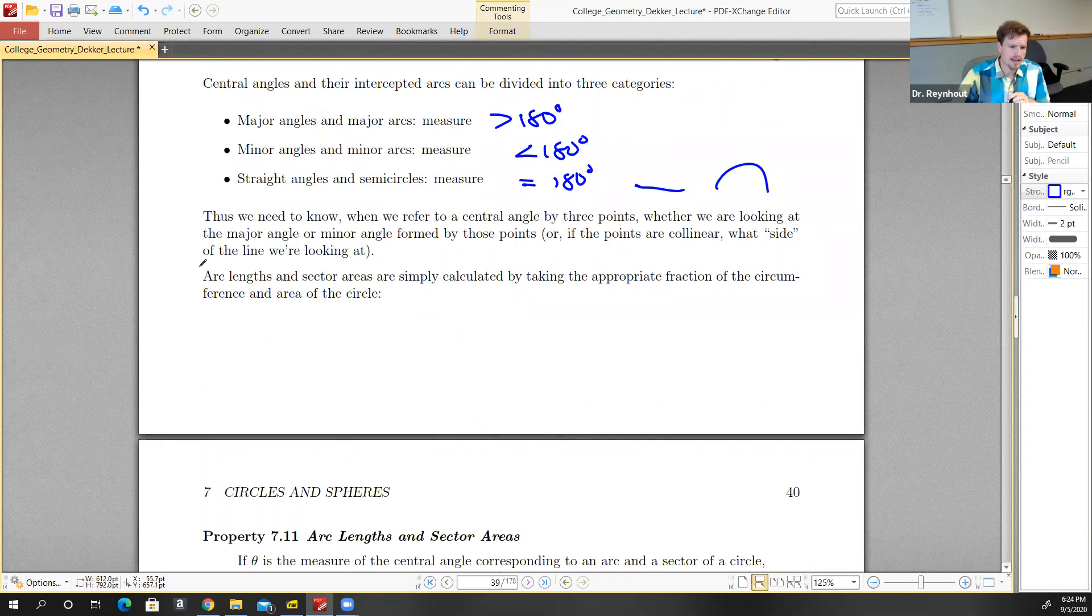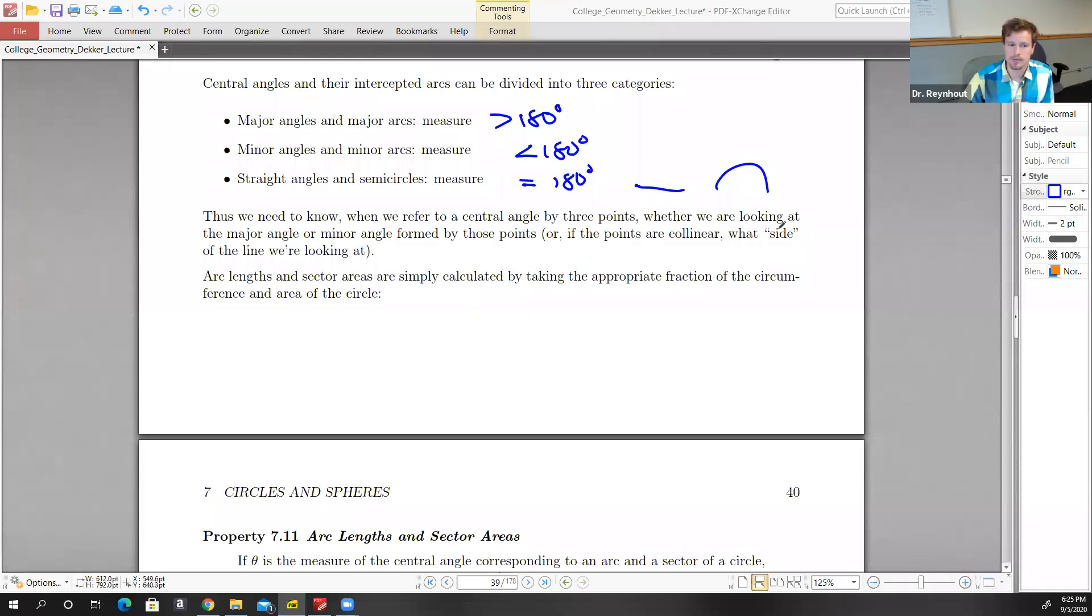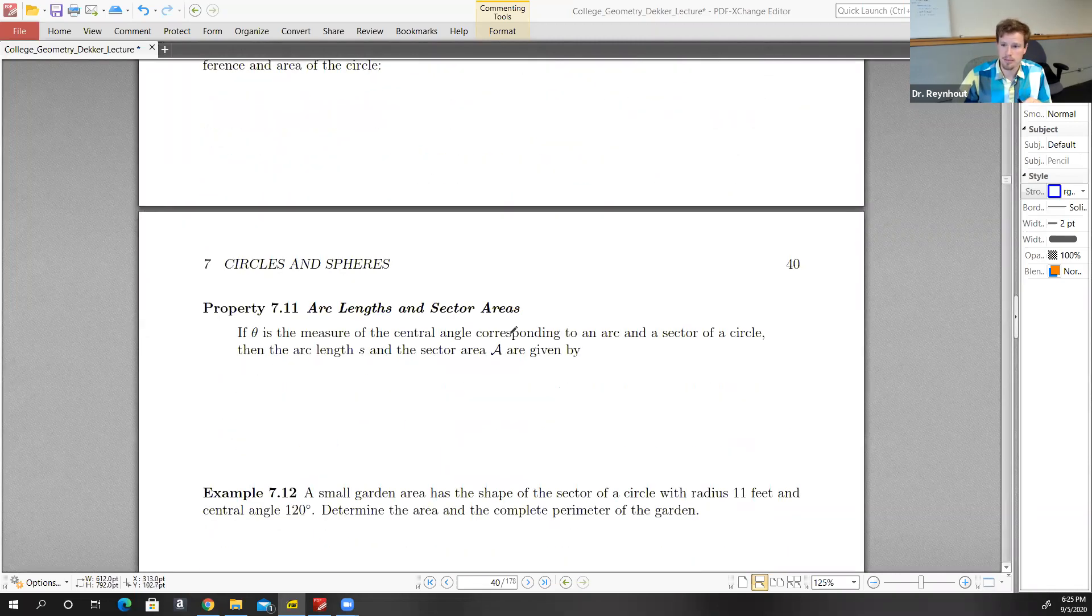We can find arc lengths and sector areas by taking the appropriate fraction of the circumference and area of the circle.